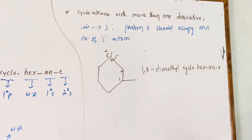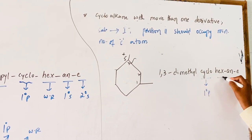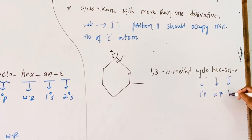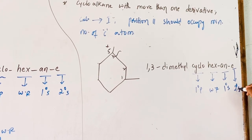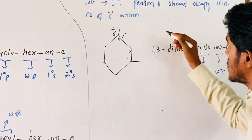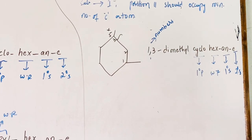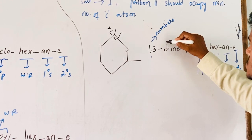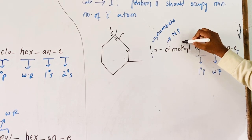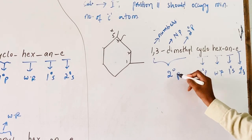The parts of nomenclature: 'Cyclo' is the primary prefix, 'hex' is the root word, 'ane' is the primary suffix, and 'e' is the secondary suffix. The numbers are separated by commas according to IUPAC rules. 'Di' represents the numerical prefix, and 'methyl' is the substituent — together forming the secondary prefix.